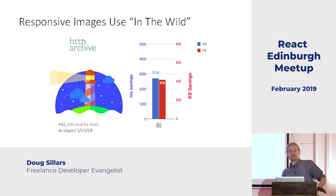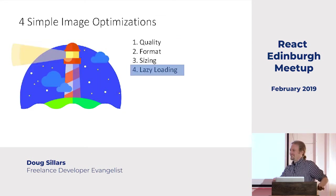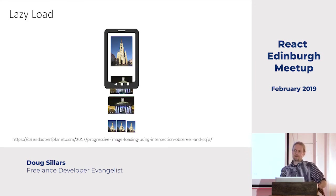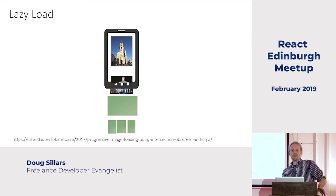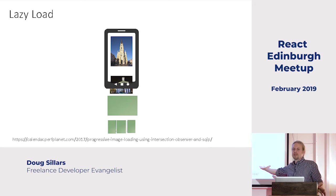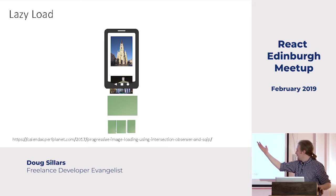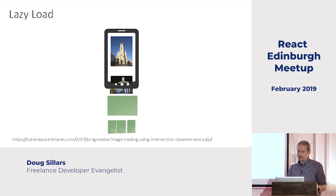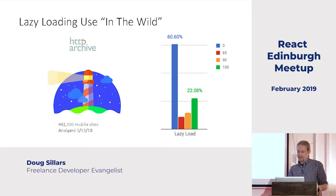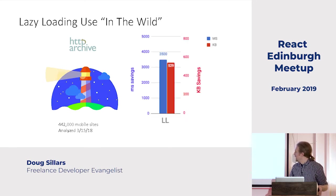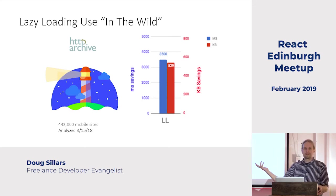The first three optimizations are all about what we do for each individual image. Lazy loading is what we can do for the whole page. The idea is: you've got a bunch of images on screen — only load the ones that are actually displayed. If I don't have to download those four images below the fold, the page loads a lot faster. Then using JavaScript, I can have those appear later when somebody scrolls into place. Most people are not doing lazy loading — 60% fail this best practice in Lighthouse — and if they did use it, they'd download 500K less and the page would load three and a half seconds faster.